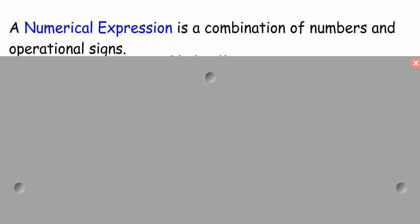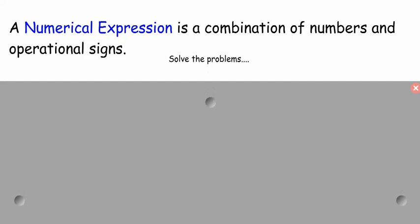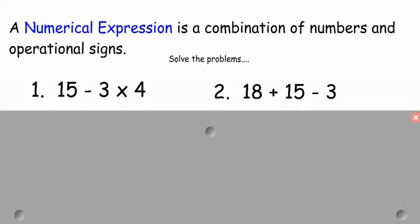We're going to do a short video on numeric expressions. This is simply a combination of numbers and operation signs. Any time that I have more than one operation sign — in this case subtraction and multiplication, or both addition and subtraction — we have to have an order in which we solve things, or we'll come up with different answers.